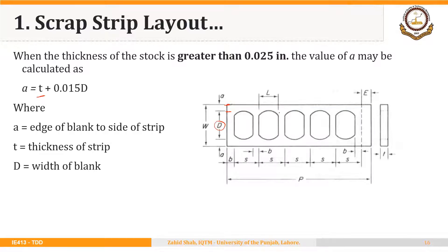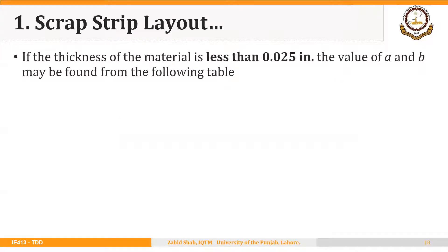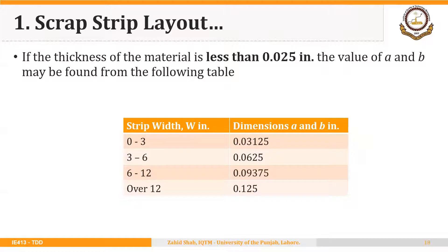We also have the value of B, which is the spacing between blanks — that is also very important to decide. That is found using a table when the thickness of the strip is greater than 0.025 inches. If the thickness is less than 0.025 inches, then another table can be used to find the values of both A and B.